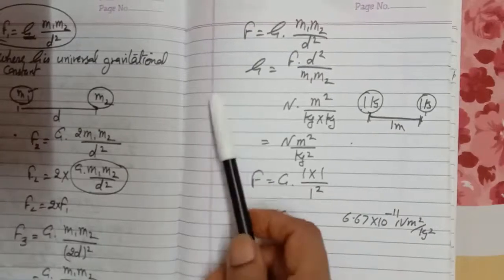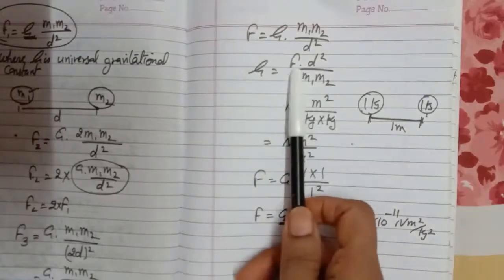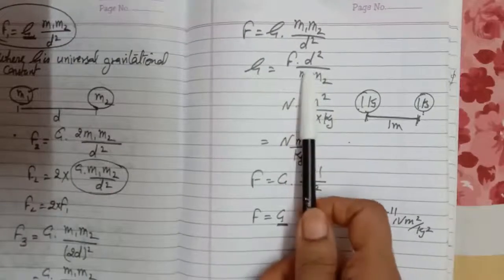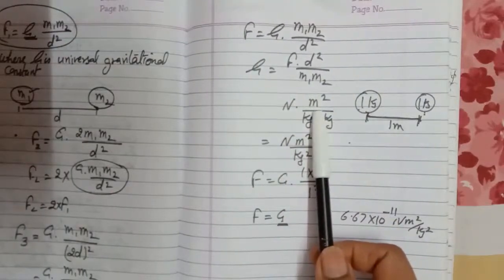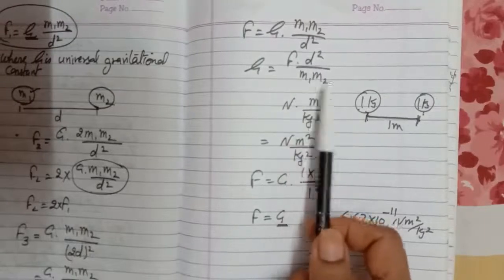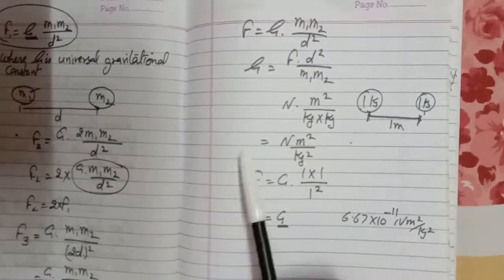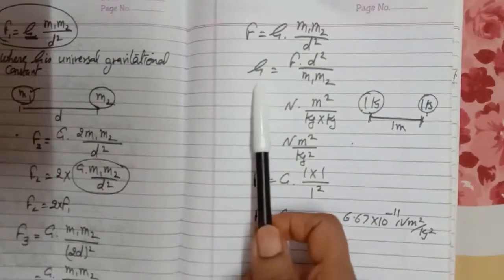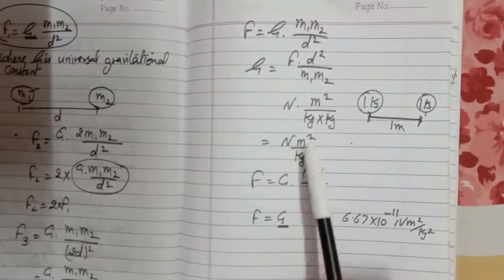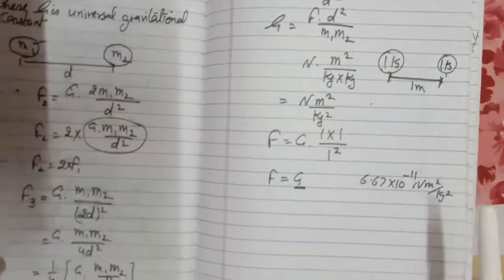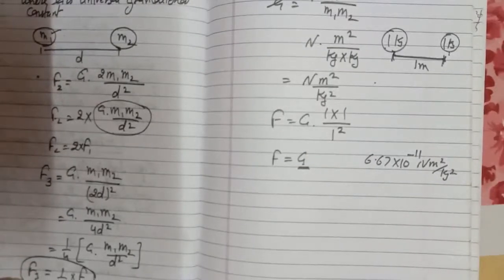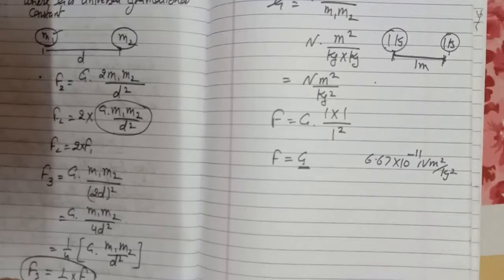About the unit of G: since force has the unit Newton, distance has the unit of meter, and mass has the unit of kg, the SI unit of G — the universal gravitational constant — is N·m² per kg². We have studied all these things in the last video. Now I am going to explain some numericals of this chapter, which are based on the universal law of gravitation.